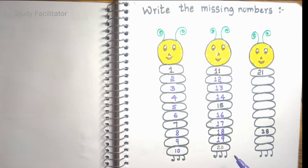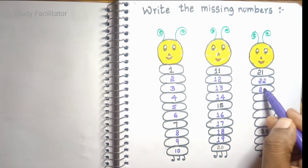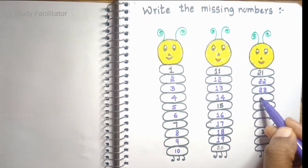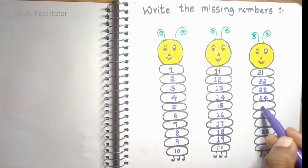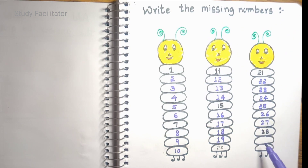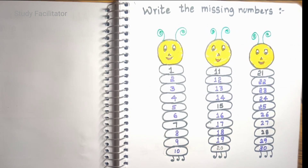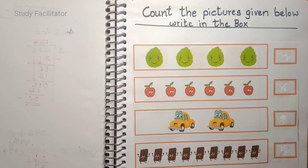Continuing: 20, 21, 22, 23, 24, 25, 26, 27, 28 — what is next? 29, 30. Kids, practice this worksheet once again.